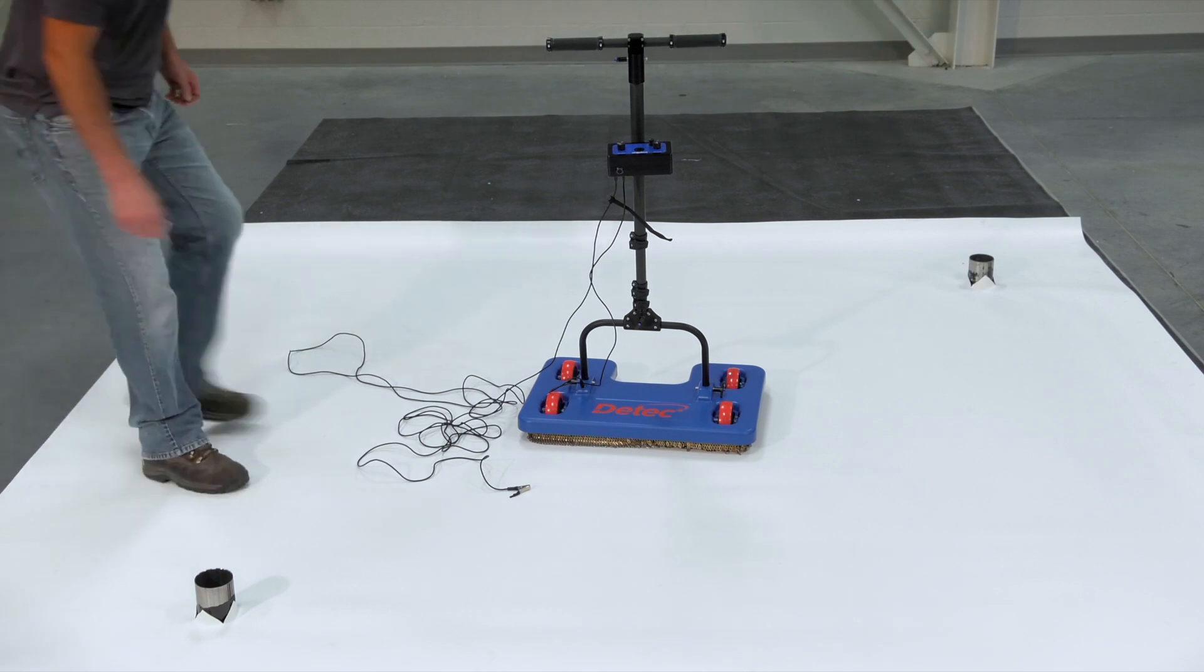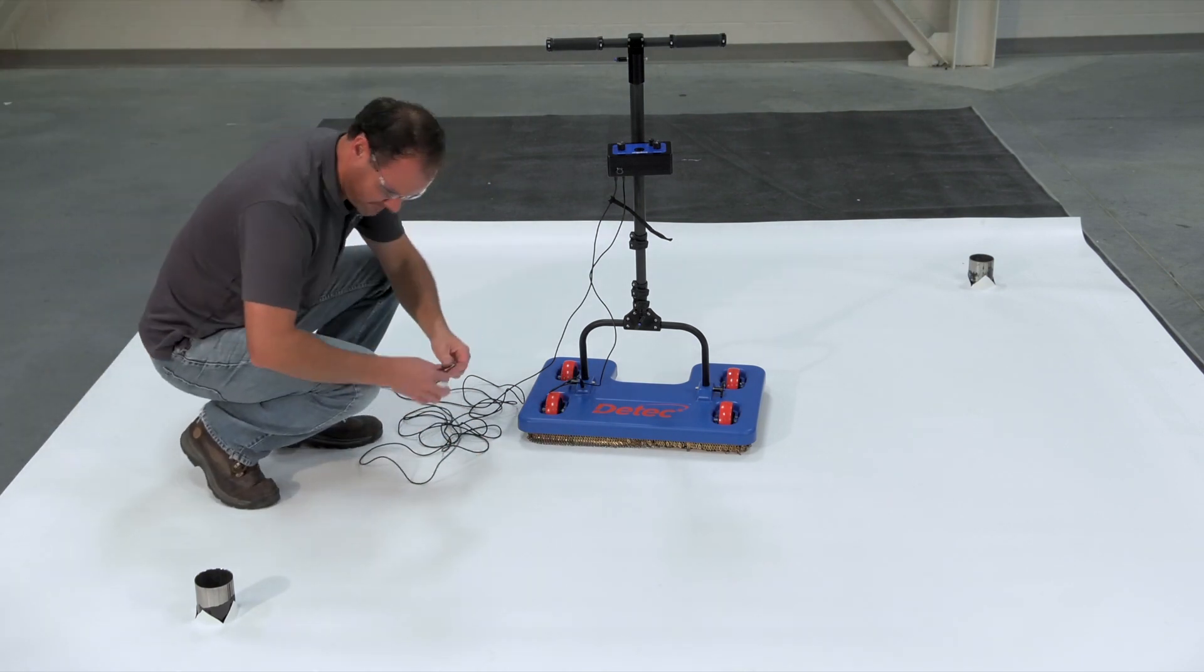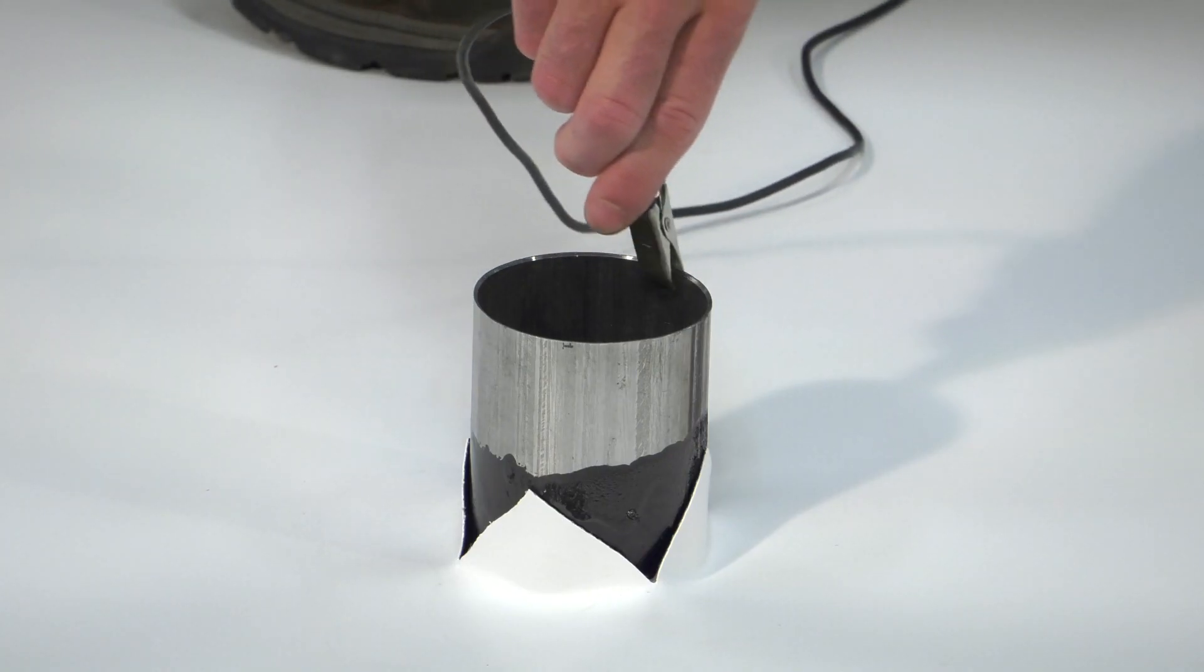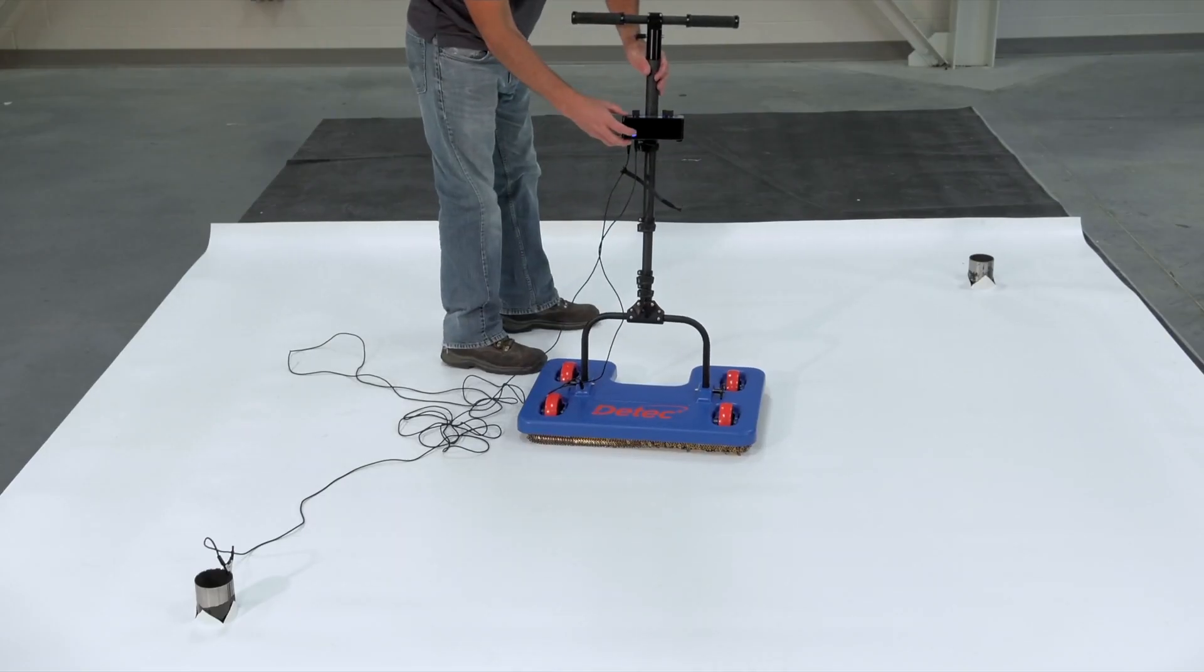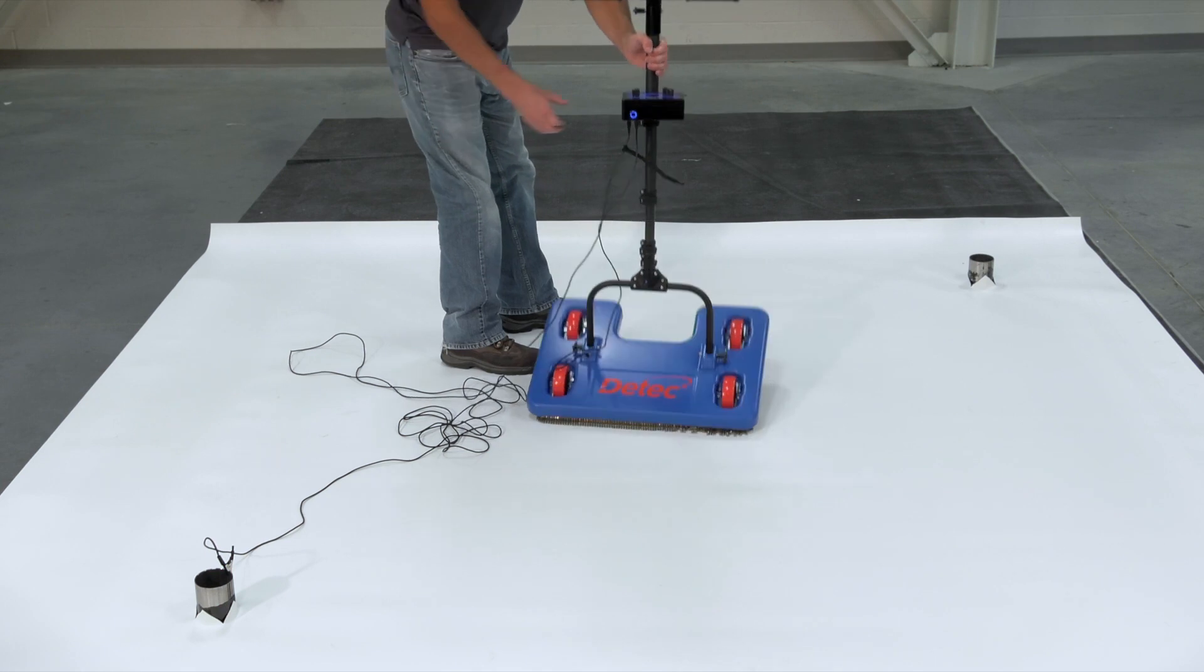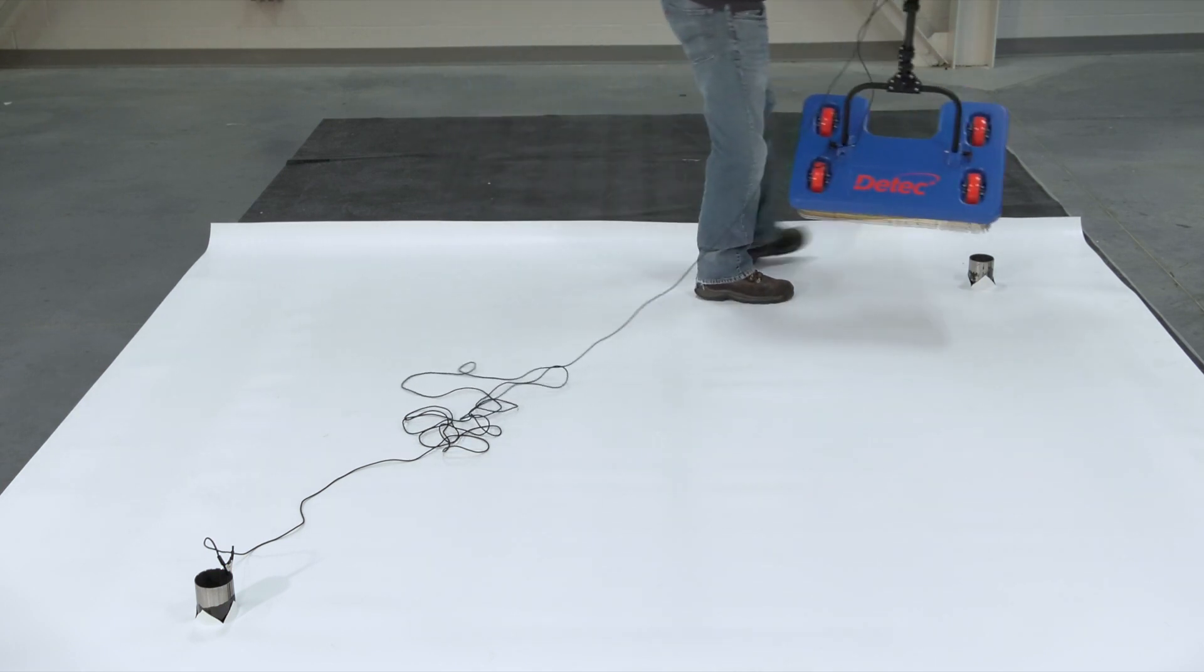To perform an ELD test, there must be connection to the conductive substrate. Any metallic penetration coated in True Ground can be used. A proper ground connection should be confirmed on a separate metallic penetration and checked periodically throughout the test.